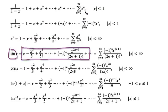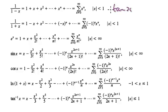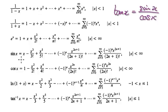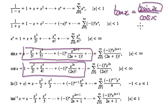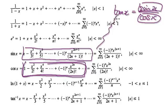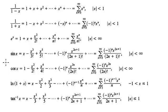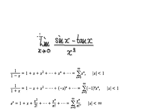By the way, another way of obtaining your series is that rather than differentiating tan of x, you could use the fact that tan of x equals sin of x over cos of x. You could get the sin series divided by the cos series. That would be another way of obtaining your series for tan of x — but that's another story. In the next video, we are going to try to find the limit of this.